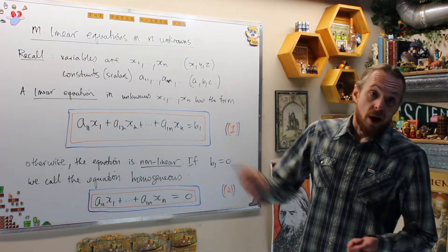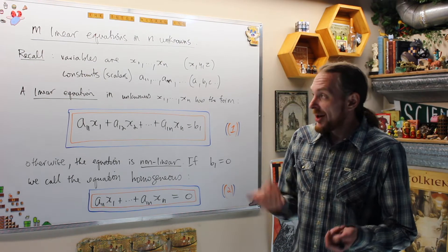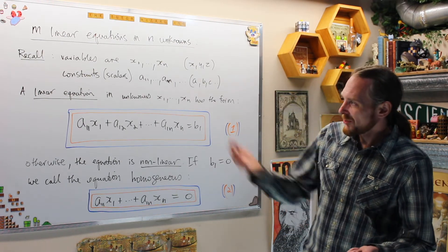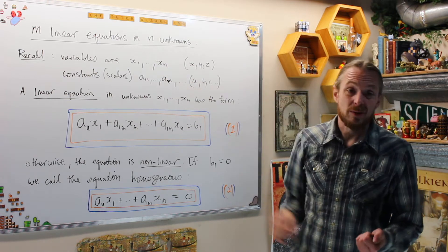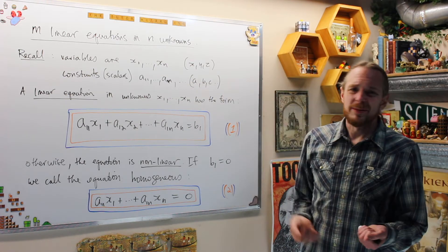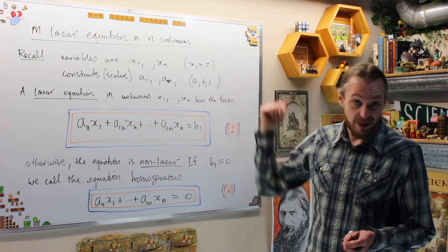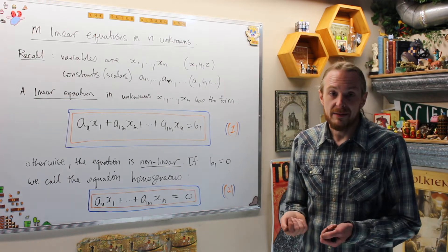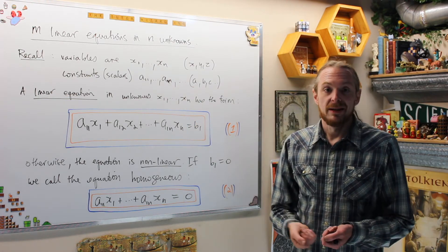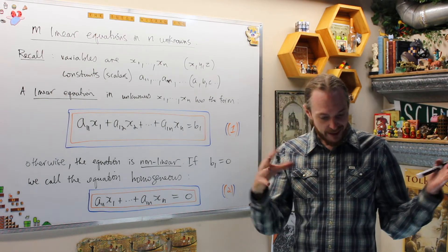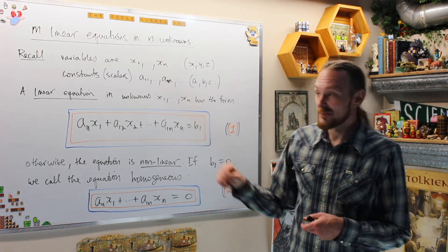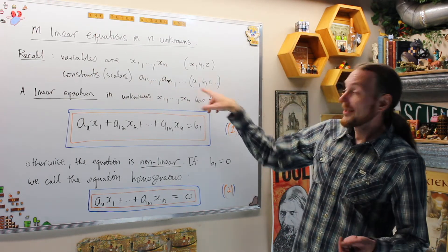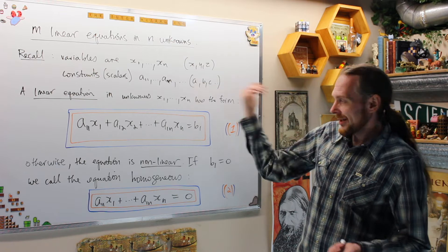Right now what we want is just one equation in N unknowns, and then we'll talk about a system of M of those equations. Recall from the previous videos: variables are denoted by x1 to xn. For simplicity, if we have three or less, we'll use x, y, z. Our constants are scalars — constant, fixed, real numbers — and we'll denote those with two indices.